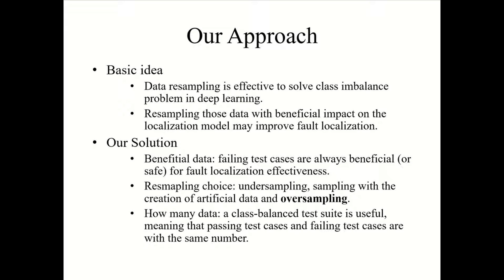Since failing test cases are beneficial, oversampling — randomly sampling with replacement, i.e., cloning the minority class — may be useful for improving fault localization. Finally, how many data should be resampled? Prior research has shown that a class-balanced test suite is useful for fault localization. Thus, we oversample failing test cases until the number of failing test cases equals the number of passing test cases.